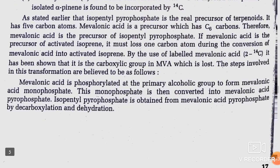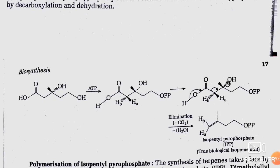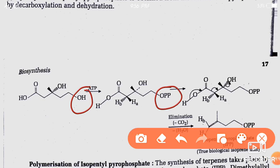Mevalonic acid is the precursor of activated isopentyl pyrophosphate, shown using labeled mevalonic acid (2-C14). Mevalonic acid is phosphorylated at the primary alcoholic group to form mevalonic acid monophosphate. This monophosphate is then converted into mevalonic acid pyrophosphate. Isopentyl pyrophosphate is obtained from mevalonic acid pyrophosphate by decarboxylation and dehydration — you can see the primary alcoholic group with OPP, and pyrophosphate formation.